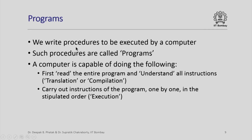We have to write such procedures to be executed by a computer. When a computer executes a procedure like this, the procedure is called a program. A computer is capable of doing exactly the same things that a person does while executing a computational procedure. The computer first reads the entire program and understands all instructions — this step is called translation or compilation. Once it has done that, it carries out the instructions one by one in the stipulated order, which is called the execution of the procedure.